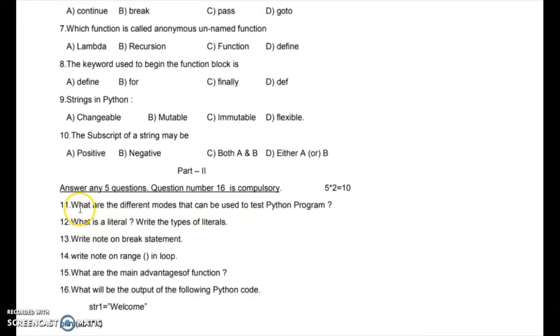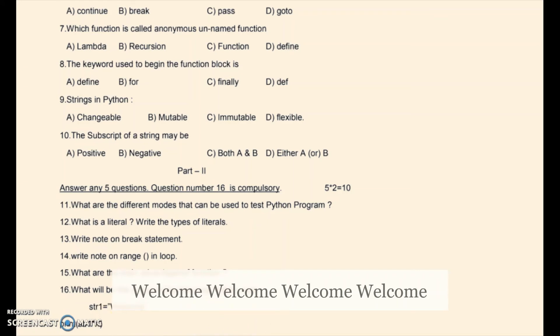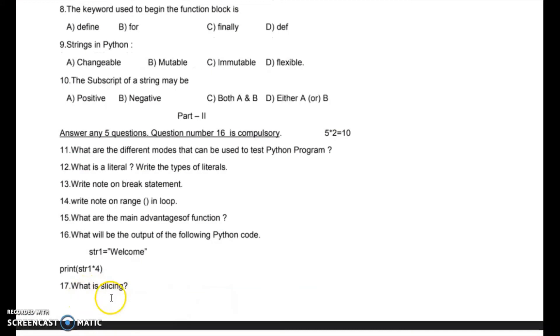Part two answers: first question — what are the different modes that can be used to test Python programs? Second question — what is a literal, and what are the types of literals? Next, write notes on the break statement, write notes on range in a loop, what are the main advantages of functions, and what will be the output of the following Python code — STR1 is 'welcome' and print of STR1 repeated 4 times. The output is: welcome welcome welcome welcome.